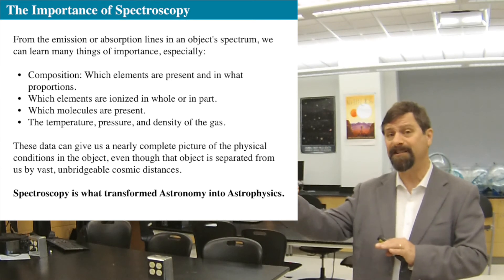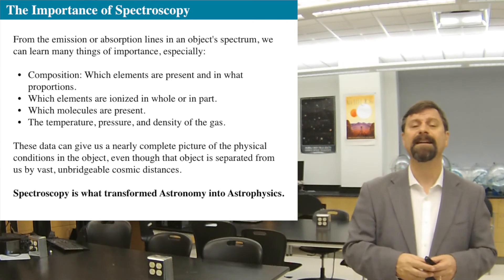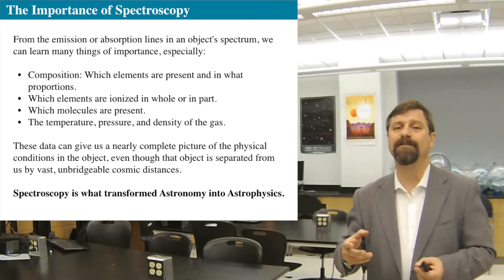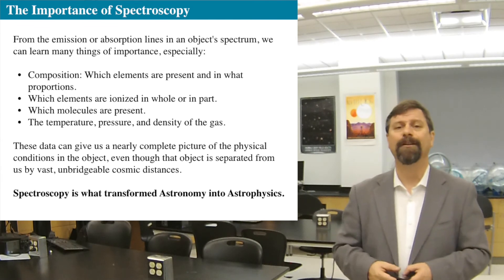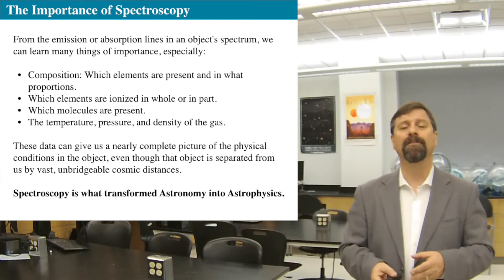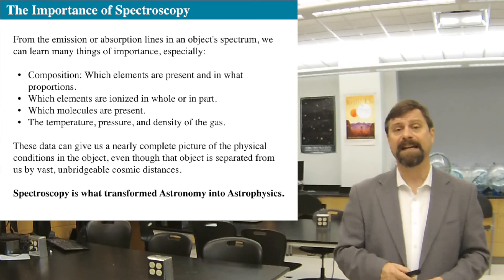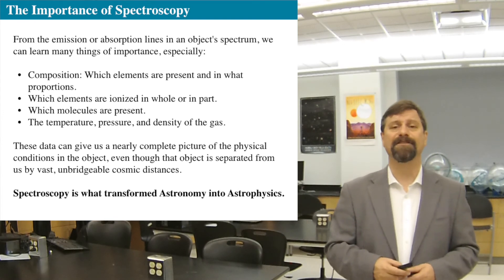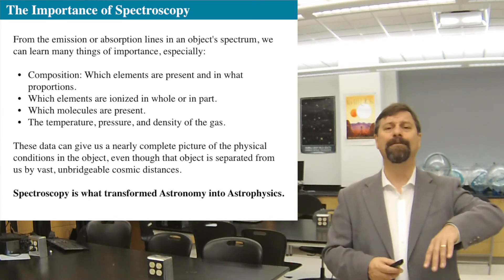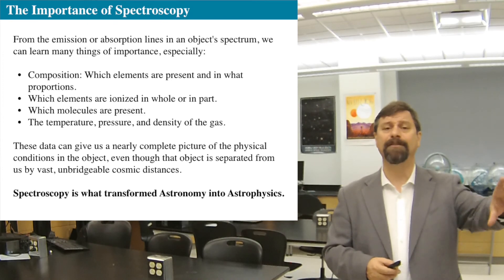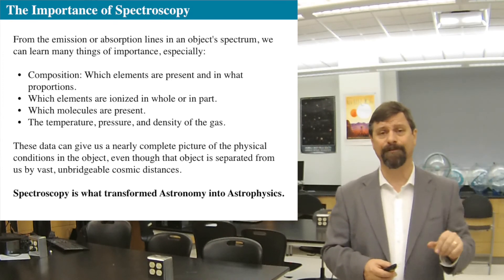Stars are very dim, so it took a long time for the technology — such as photographic spectroscopy — to develop. But once we understood the nature of a star's spectrum, we could transform astronomy into astrophysics, allowing us to learn exactly how something is happening even though it's hundreds, thousands, or millions of light years away.